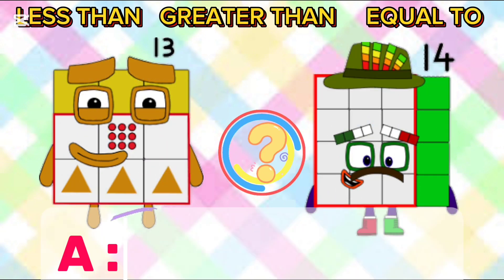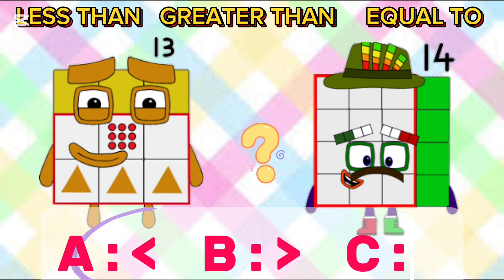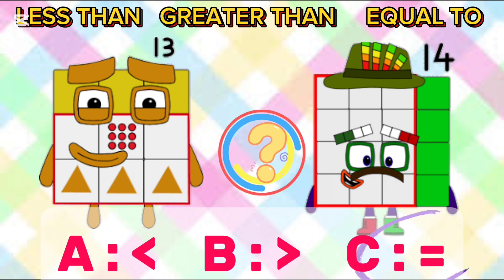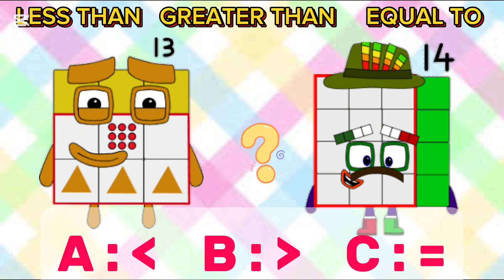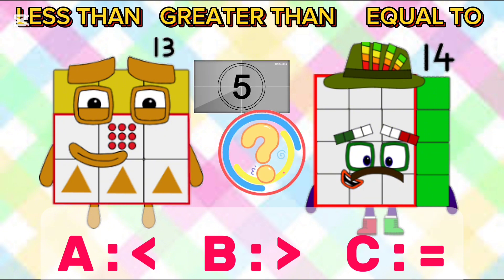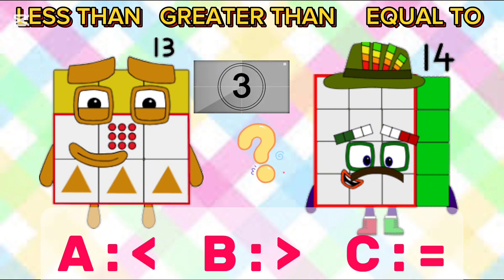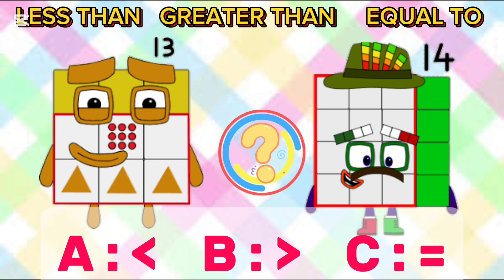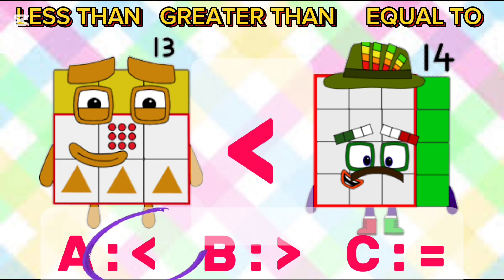What will come? A: less than, B: greater than, C: equal to. The answer is: 13 is less than 14.